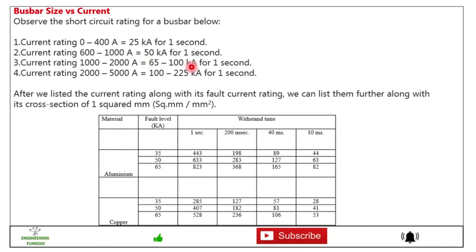Current 600 to 1000 amp, 50 kA for 1 second. So these are the short circuit current rating and ranges, and it is most important for the busbar to withstand the short circuit current. After we listed the current rating along with its fault current rating, we can list them further along with its cross-section of one square mm. So here for materials aluminum we can see the fault level.